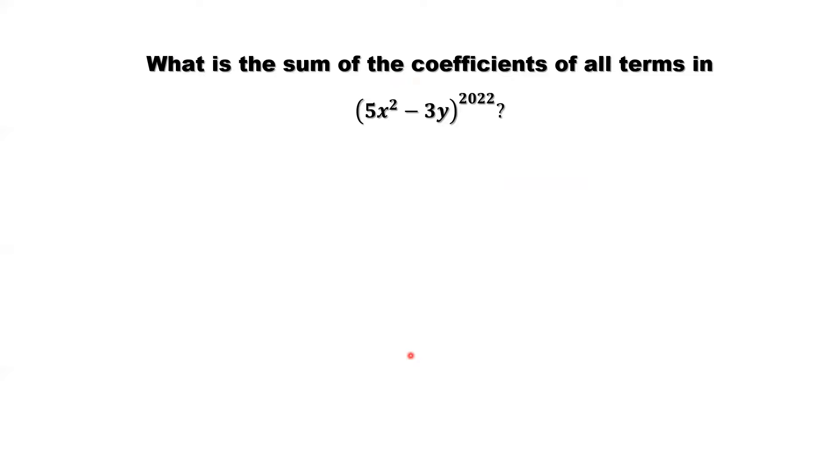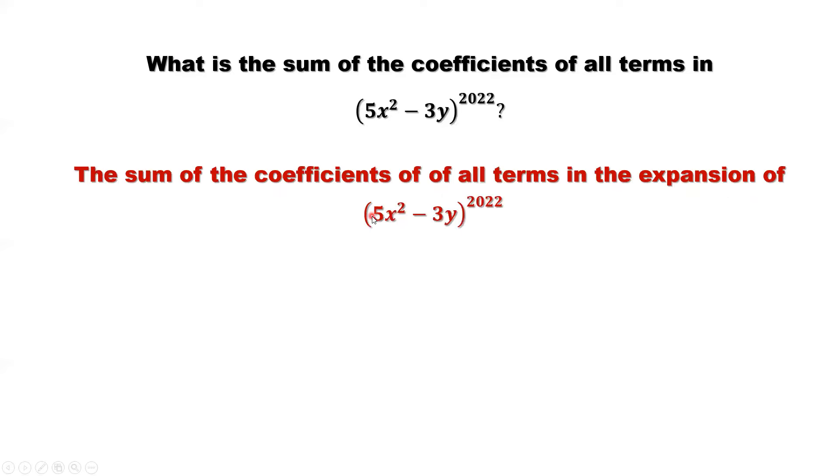This gives us the hint. We can find the sum of coefficients of all terms in the expansion of 5x squared minus 3y to the power 2022. What do we need to do? Just replace x by 1, y by 1 in the expansion. All x, y will disappear because x equals 1, y equals 1.